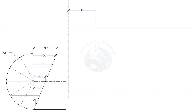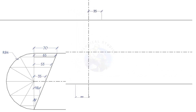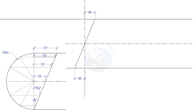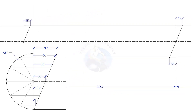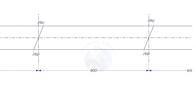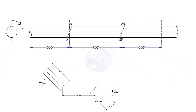Draw a smooth curve connecting these points. Or, divide the pipe into 12 parts, draw a layout as shown, and mark. Repeat the process. The direction of the marking shall be the same.